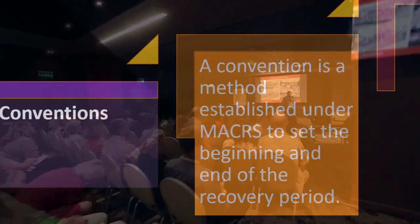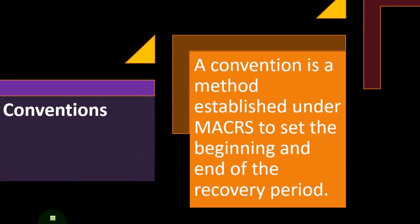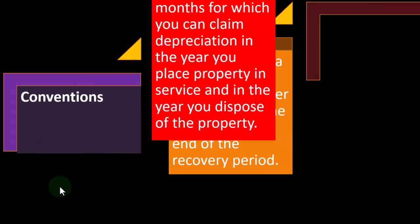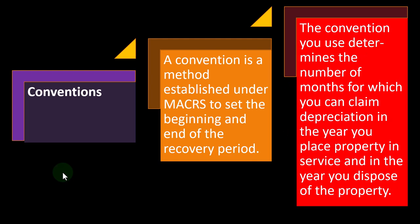A convention is a method established under MACRS to set the beginning and ending of the recovery period. It's designed to be a little bit easier on the beginning and ending period without those fragments of the year. The convention you use determines the number of months for which you can claim depreciation in the year you place the property in service and in the year you dispose of the property.